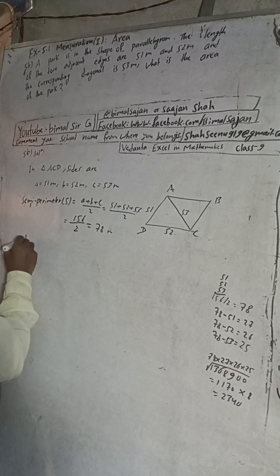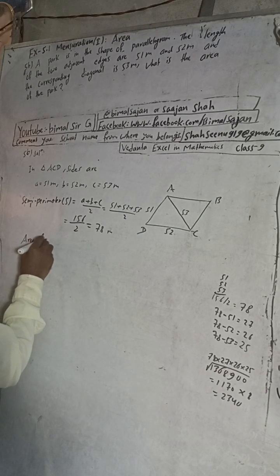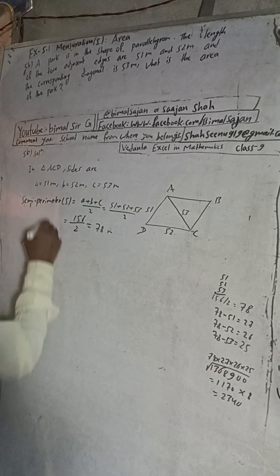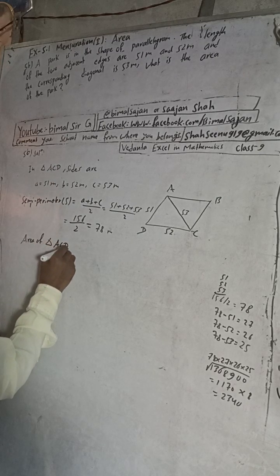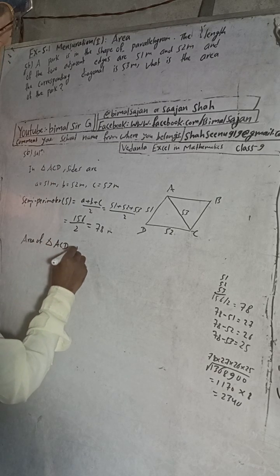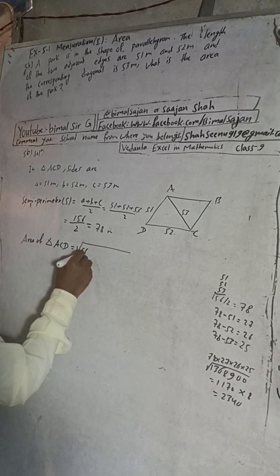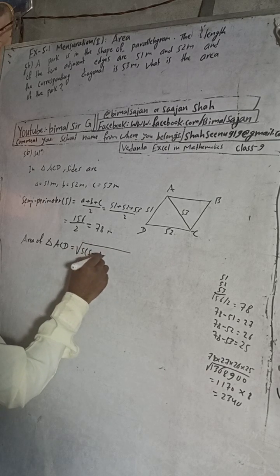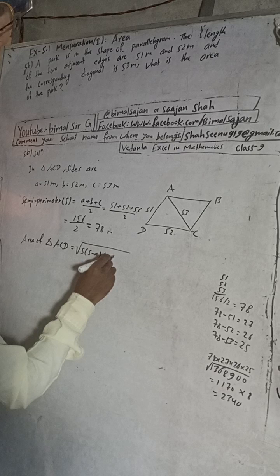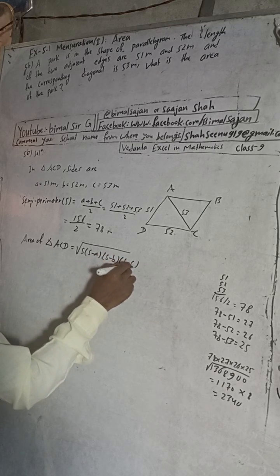Now therefore, area of triangle ACD is equal to, formula is root under S into S minus A into S minus B into S minus C.